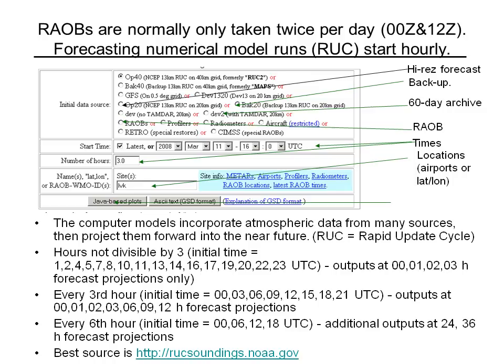If you go to the website rucsoundings.noaa.gov, the opening page presents a screen where you get to choose the data source and the time of the observation or forecast. At the top there's a list of choices. The one I would recommend for normal purposes is labeled OP20 — a forecast on a 13-kilometer grid, for some reason interpolated onto a 20-kilometer grid, whereas the default is that same forecast interpolated onto a coarser 40-kilometer grid.